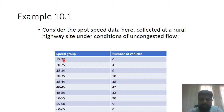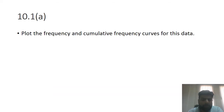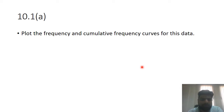The first thing they want us to do is plot the frequency and cumulative frequency curves for this data. So I must find out the frequency and cumulative frequency for each speed group.